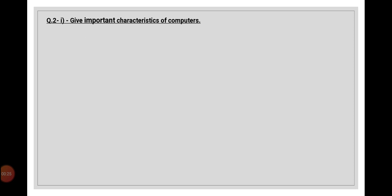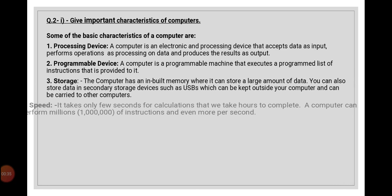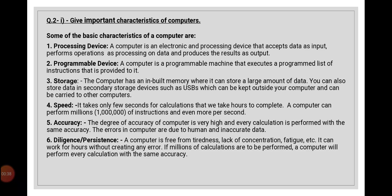The first question is that we have to give important characteristics of computers. I have listed down characteristics from your book as well as from the internet. You can write down any four or five characteristics. The first important characteristic of a computer is that it is a data processing device — it inputs data, performs instructions, and gives us a result. The second characteristic is that it is a programmable device — it performs instructions on the basis of programs or instructions given to it.